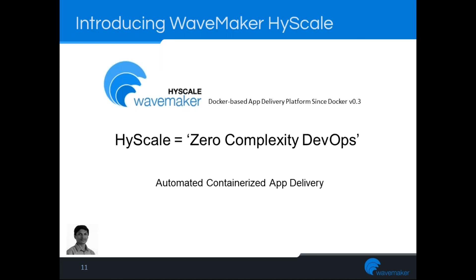That's where we talk about WaveMaker HighScale — a containerized application delivery product from WaveMaker. The product has been using container technology since Docker version 0.3, almost since containerization came into being. HighScale is designed around two areas: first, automation — providing complete DevOps automation for containerized application delivery; and second, simplicity — with a design focus on zero complexity so DevOps teams can easily adopt and manage it.